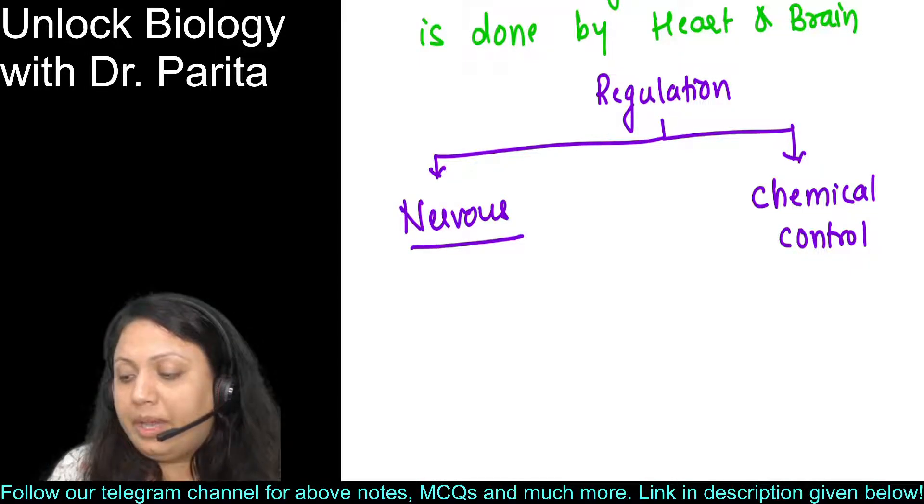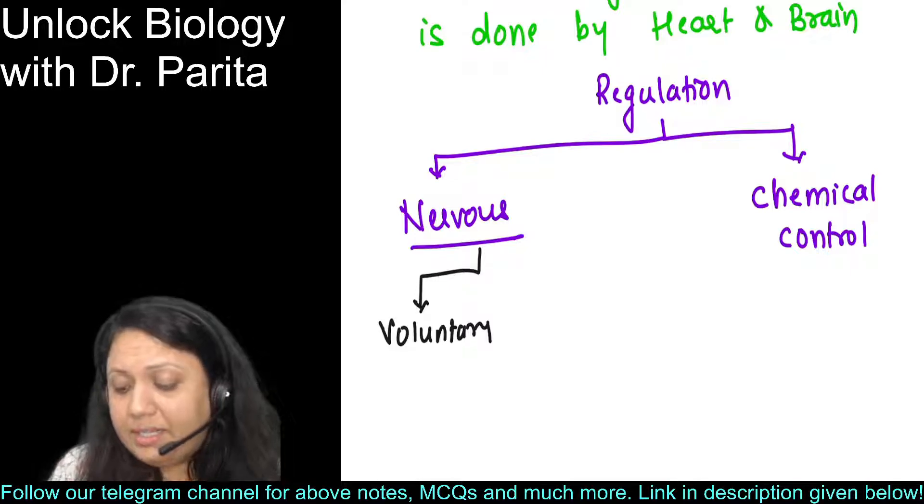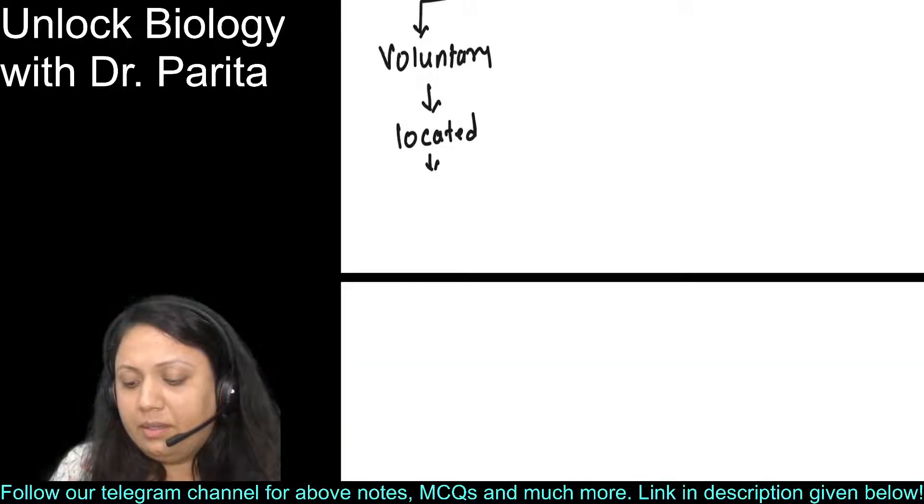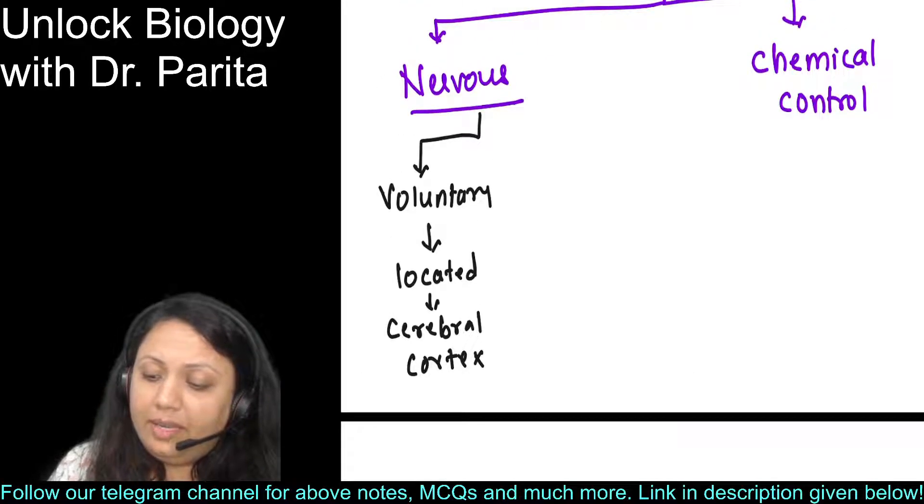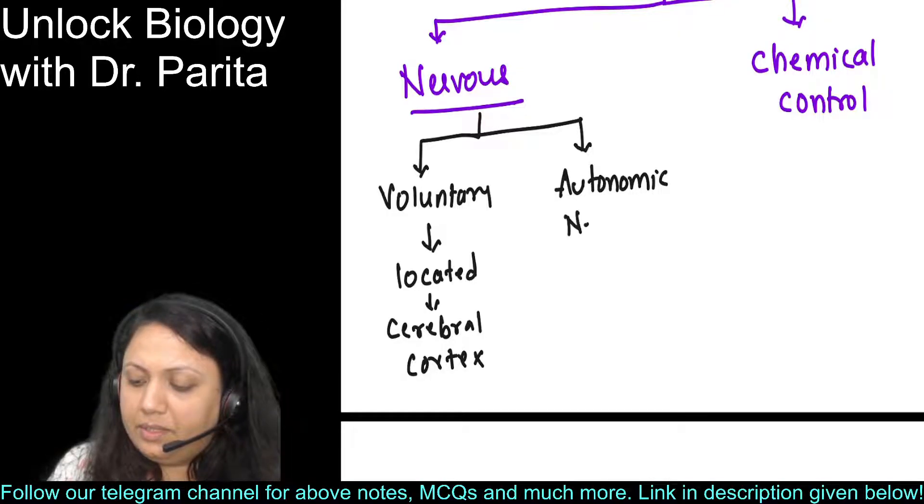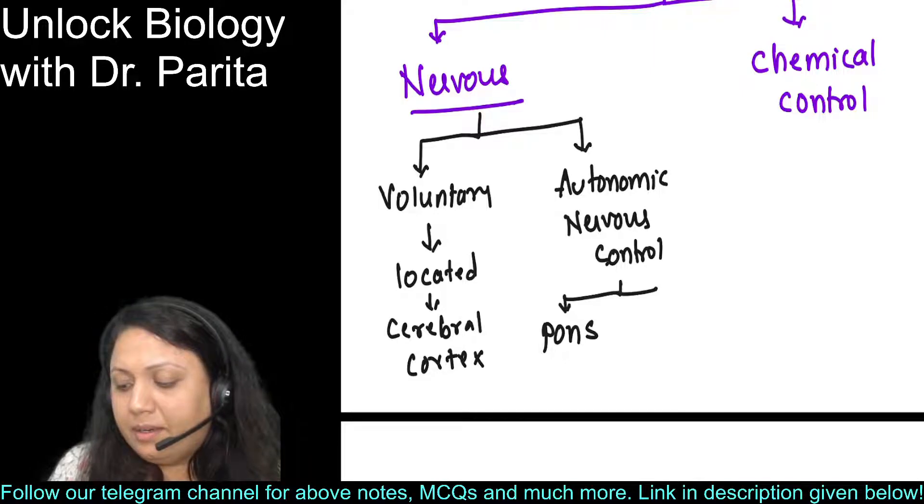In nervous control, you have voluntary control, which is located in the cerebral cortex region. The involuntary control - that is your autonomic nervous control - is located in pons and medulla oblongata.